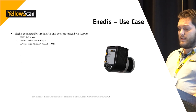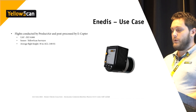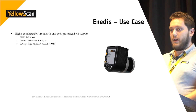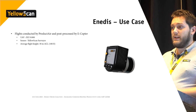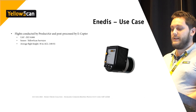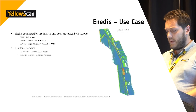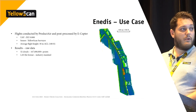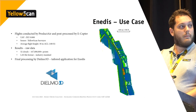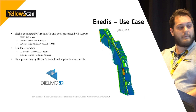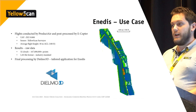On this use case, the flights were conducted by Product Air and post-processing was done by eCopter. They used the DJI Spreading Wings S1000, the sensor was a Yellowscan Surveyor, and the average flight height was 30 meters above ground level. This is one small portion of the dataset they acquired — you can see the power lines in the middle.